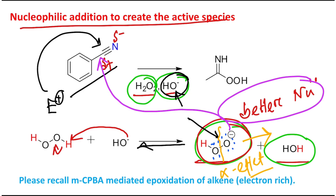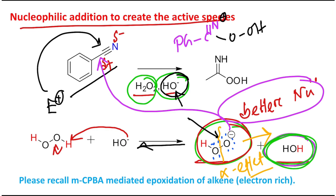So first, it will produce Ph–C(=N⁻)–OOH. Let me draw it carefully: this is C double bond N minus, and along with that O–O–H. It can then abstract a proton from the medium — water is produced — and this generates the active species. So previously in the reaction medium we had hydrogen peroxide, and now this active species is produced.